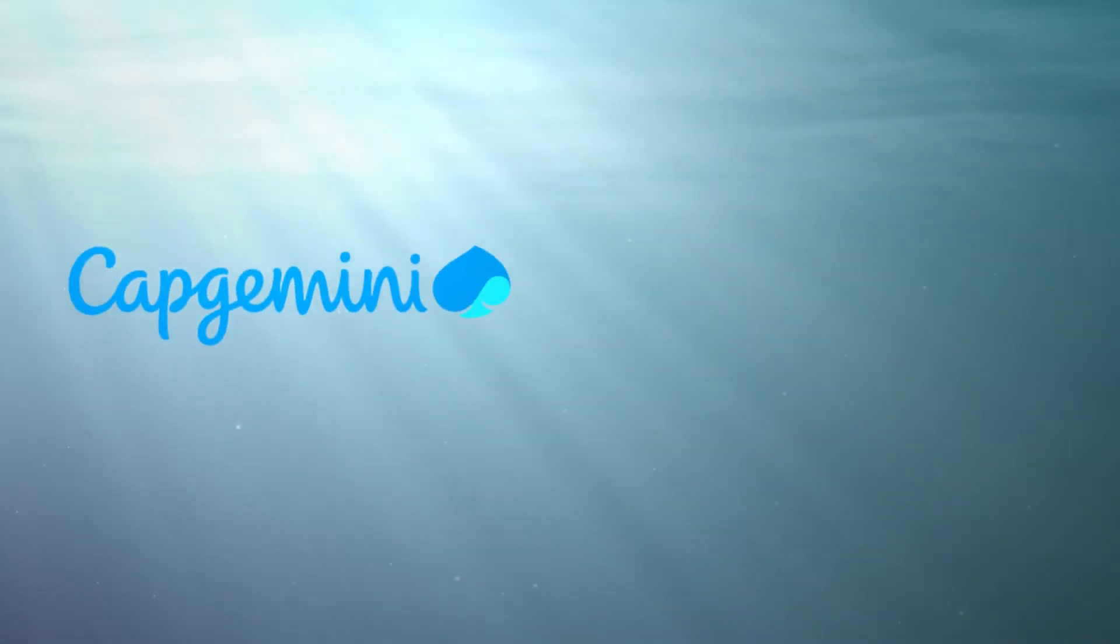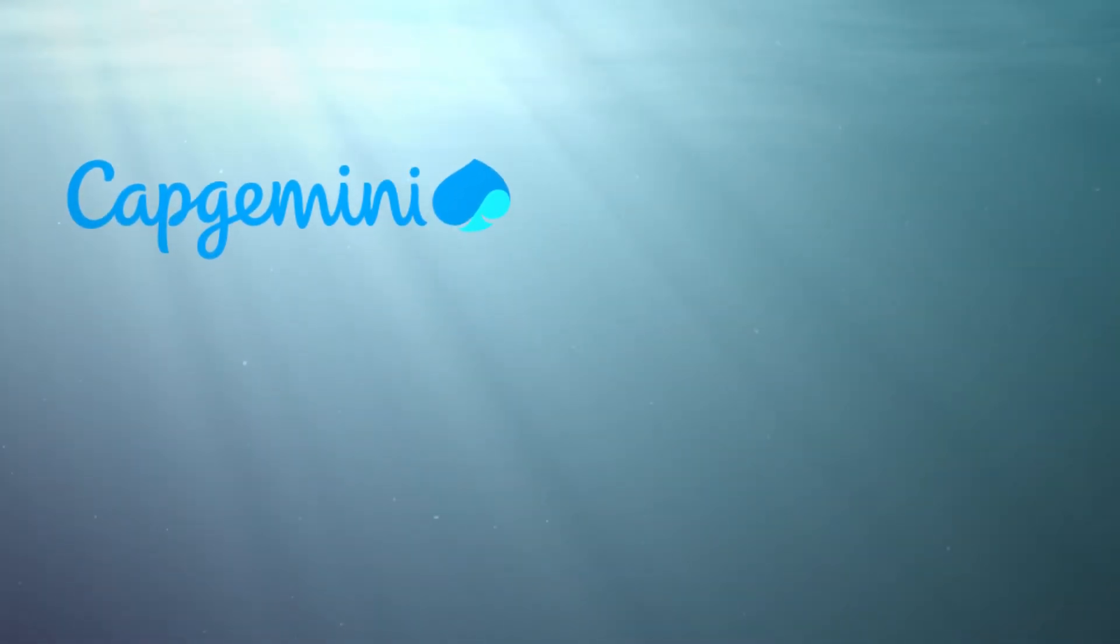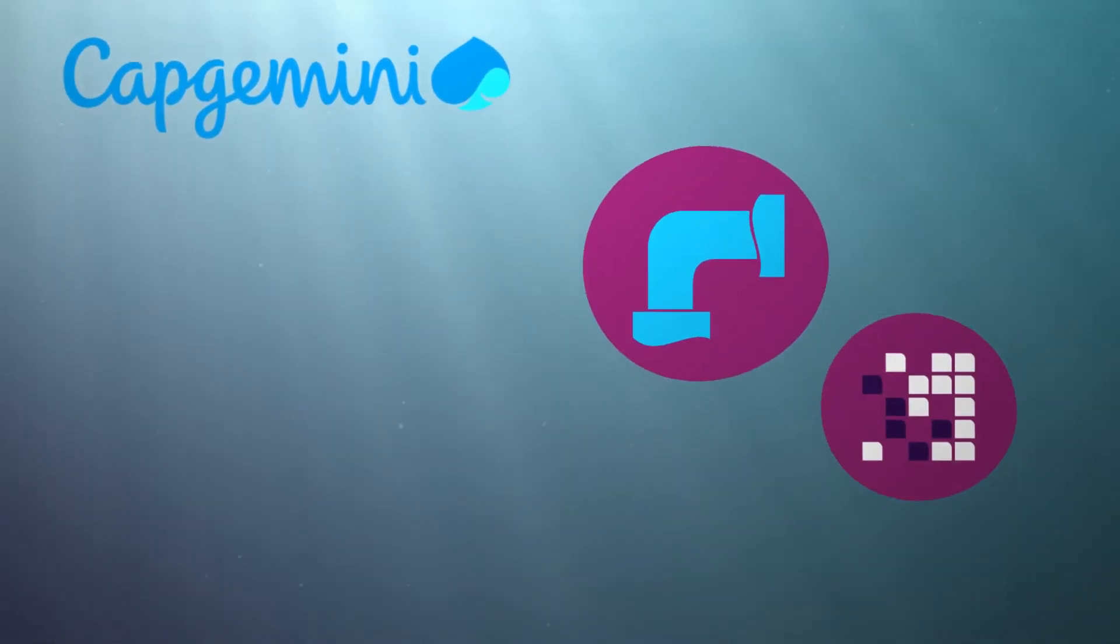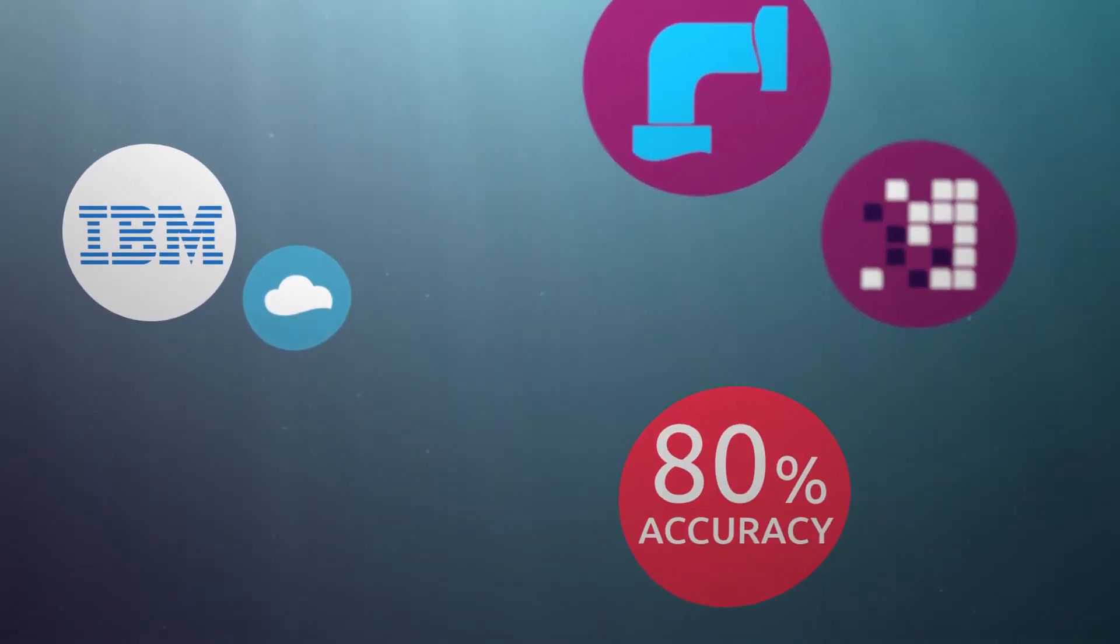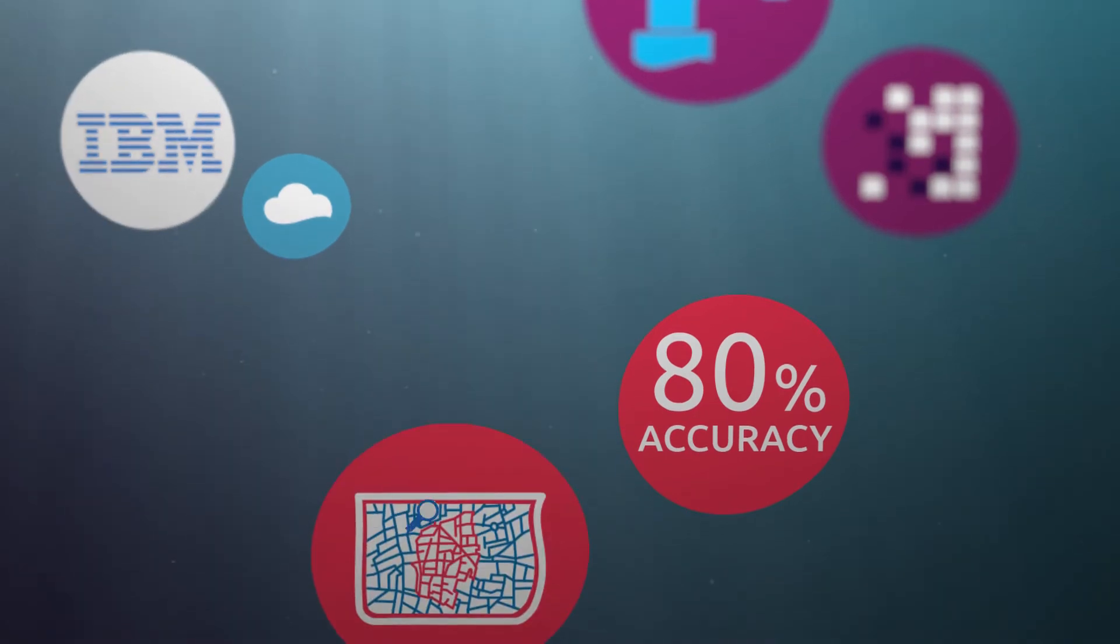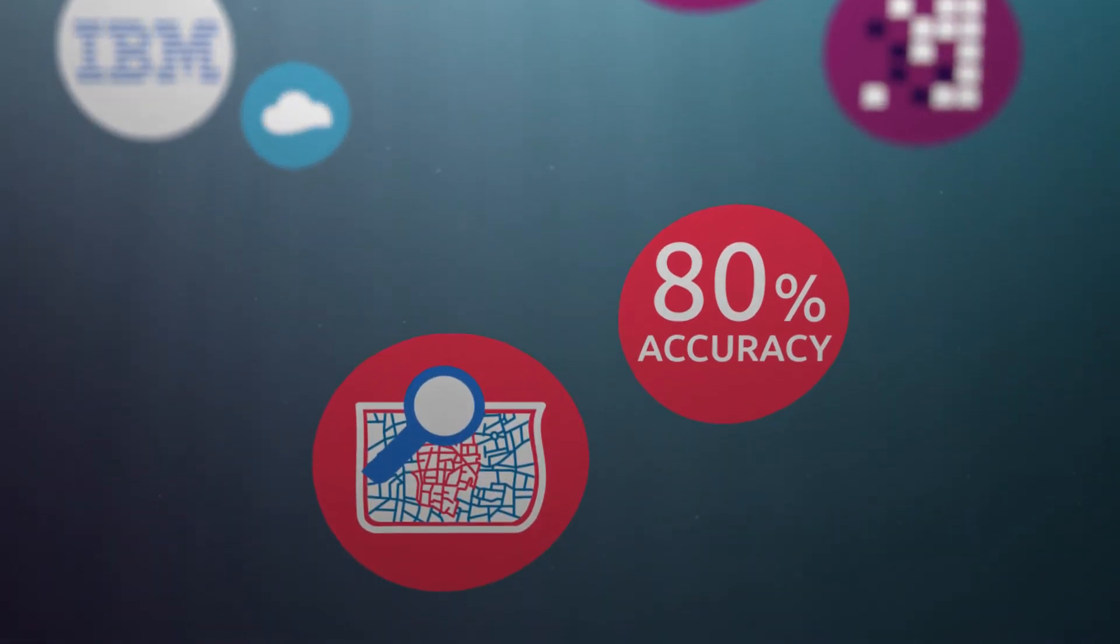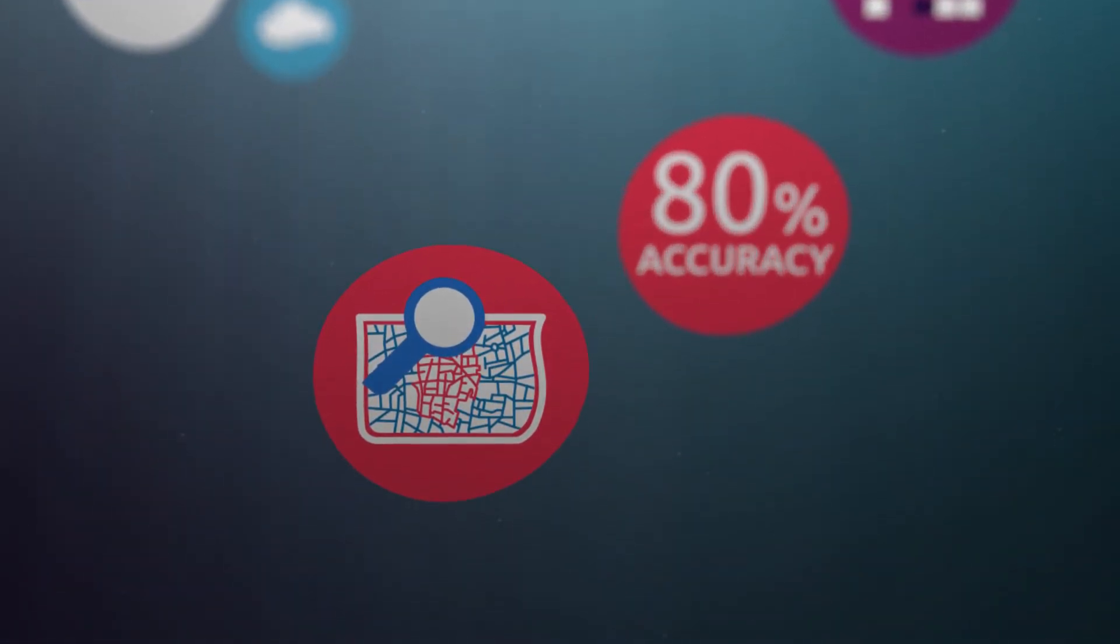At Capgemini, we've taken a different approach. Leveraging operational data and tools on the IBM cloud, we can detect leaks with over 80% accuracy and prioritize search areas without the need for additional sensors.